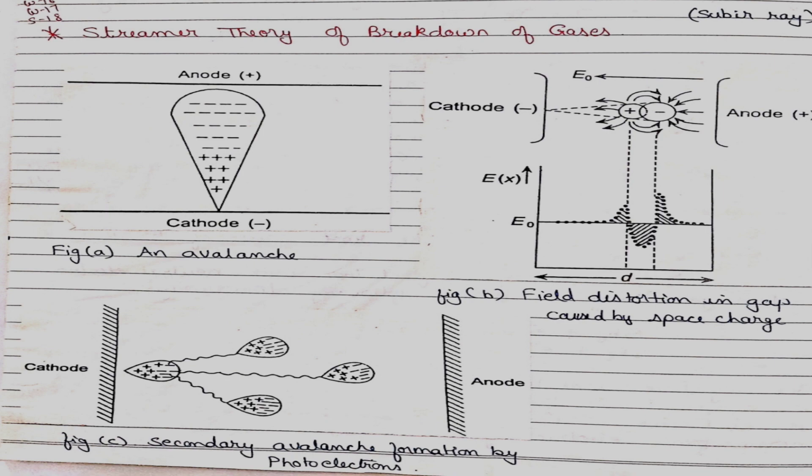When we discuss Townsend's theory, we observe that according to Townsend's theory, electric spark discharge is due to the ionization of gas molecules by the collision of electrons, and the release of electrons from the cathode due to positive ion bombardment on the cathode.